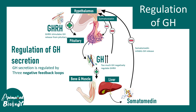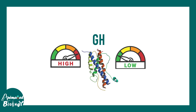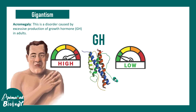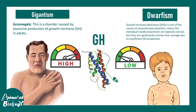When this stringent regulation breaks down, such as in pituitary tumors, excess growth hormone leads to acromegaly (gigantism). Conversely, low production of growth hormone leads to dwarfism. Growth hormone acts at a molecular and cellular level, and its levels are tightly regulated throughout the body.